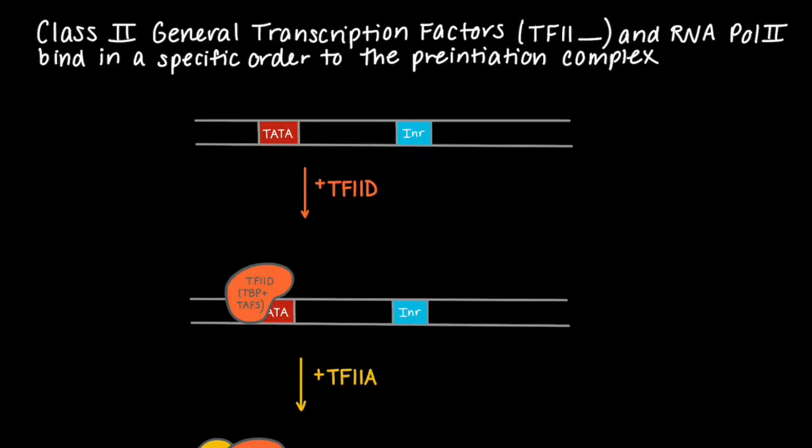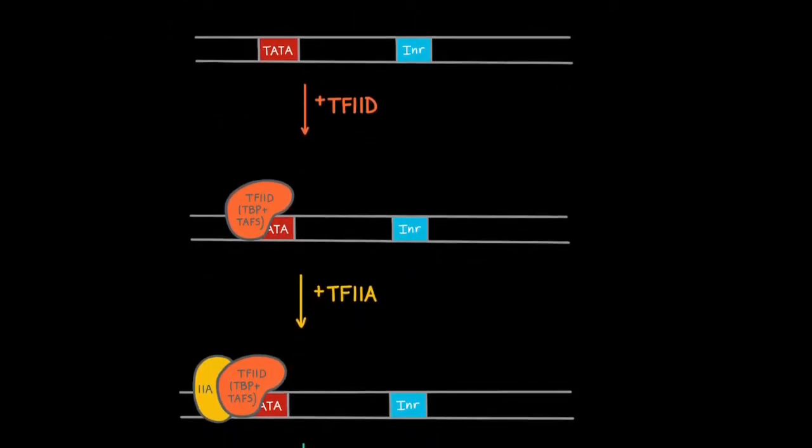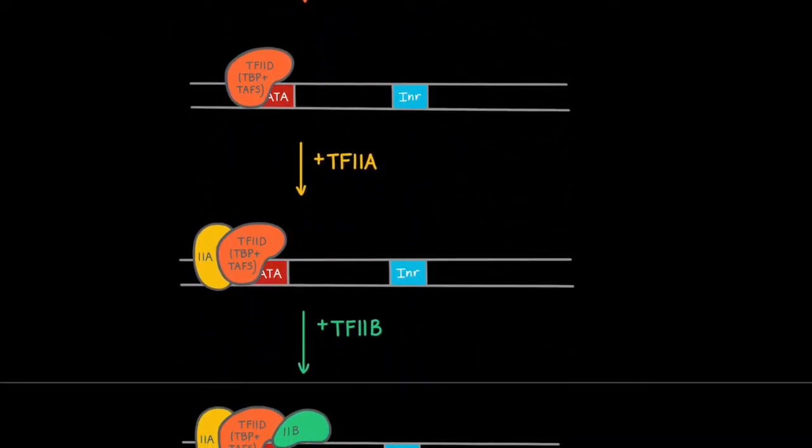The first to bind is TF2D, which contains TATA binding protein, abbreviated TBP, as well as TATA binding protein-associated factors, or TAFs. The next factor to join is TF2A followed by TF2B.